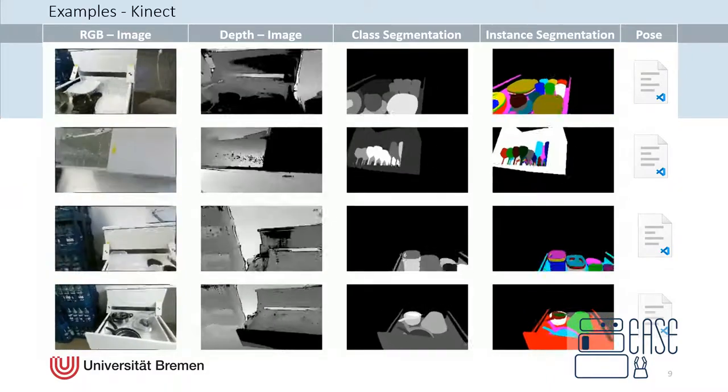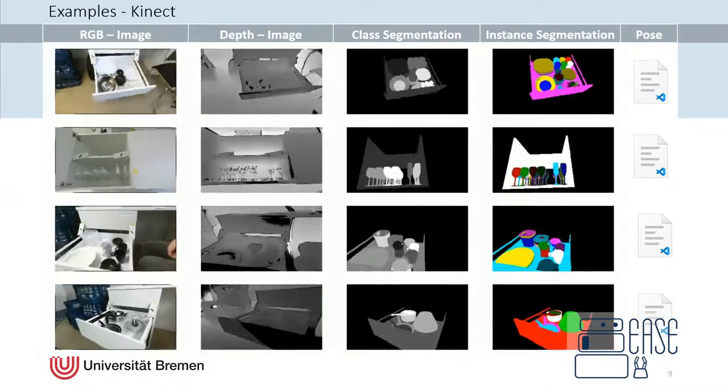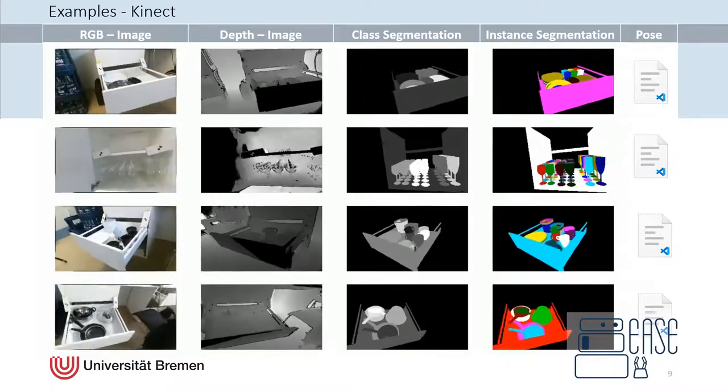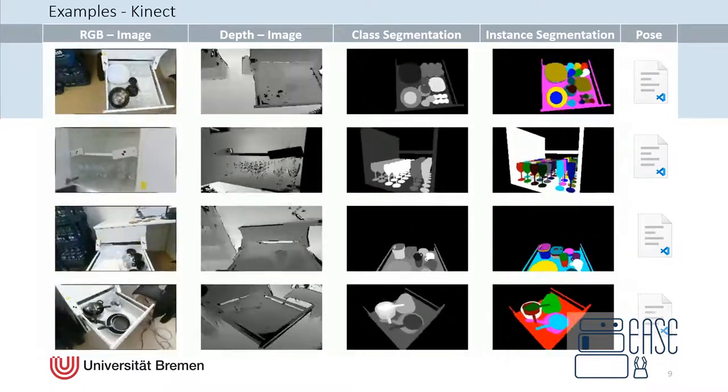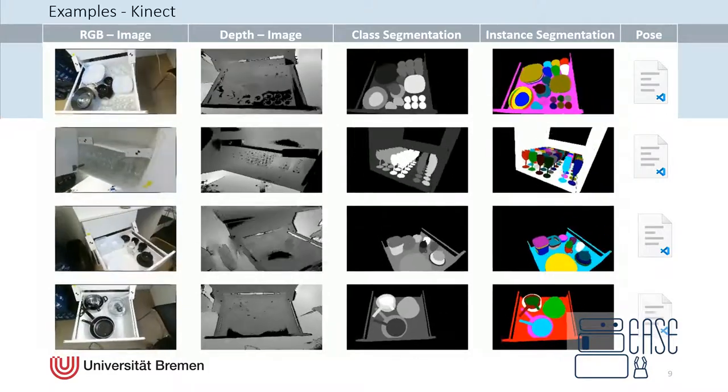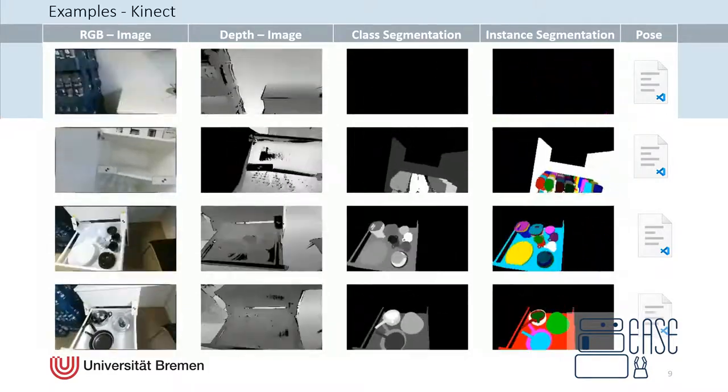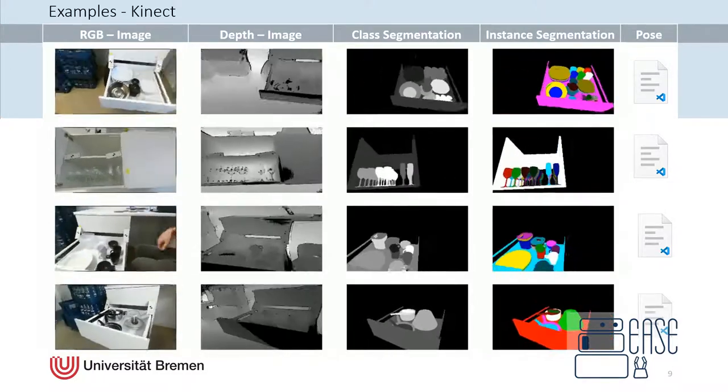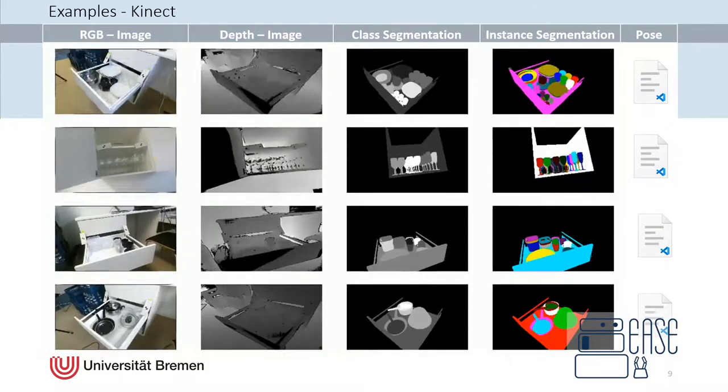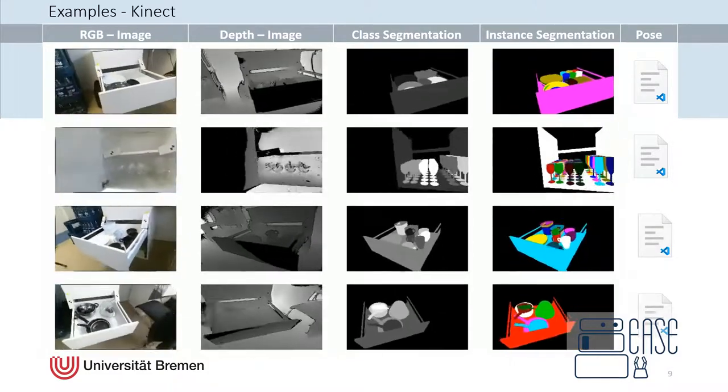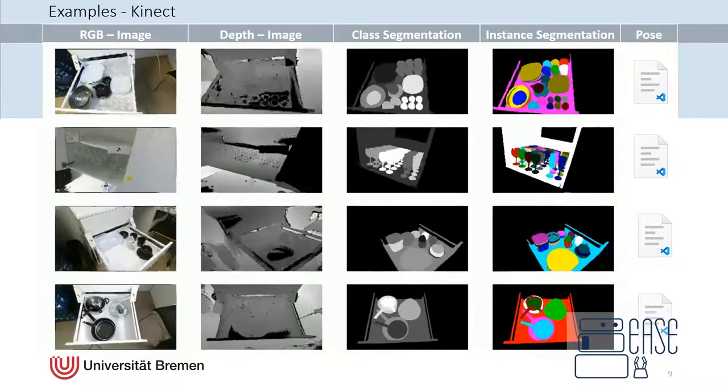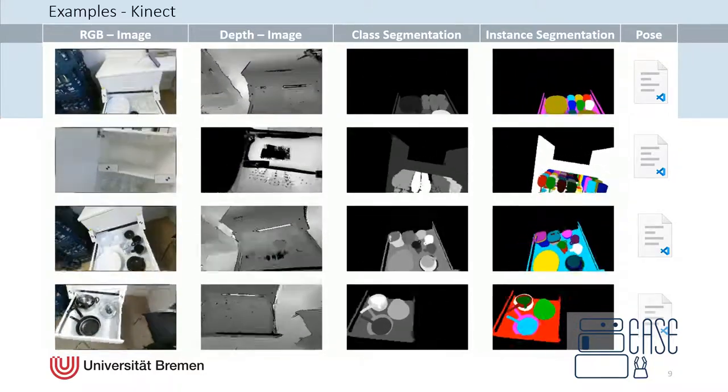To get an impression of what our dataset actually looks like, we have here some sample images. On this slide, we see sample images recorded by the Kinect camera. On the left, we have the RGB image and also the depth image from the Kinect. For each image, we provide a class segmentation and the instance segmentation, which are based on the actual pose, which are also provided in a JSON file.